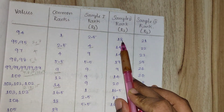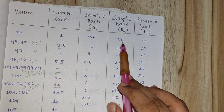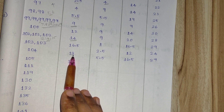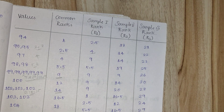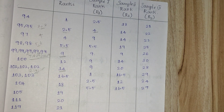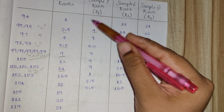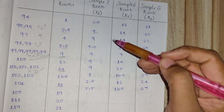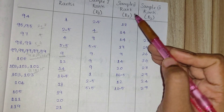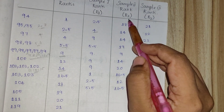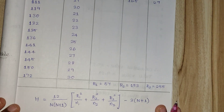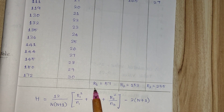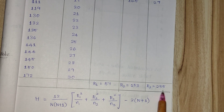For Sample 2, the first value is 104, which has rank 18. We list all 10 values for Sample 2 and their corresponding ranks. After listing all ranks for each sample, we add them up. The summation R1 for Sample 1 is 57, R2 for Sample 2 is 153, and R3 for Sample 3 is 255.